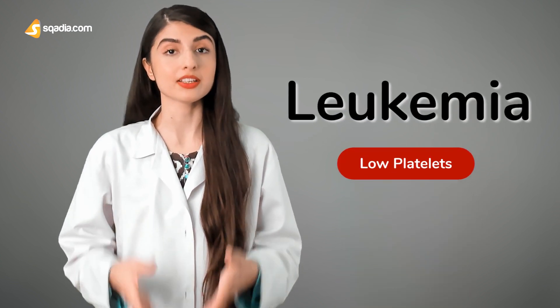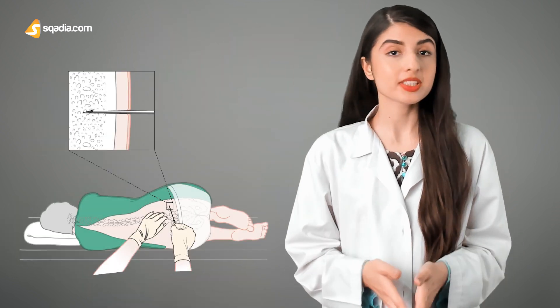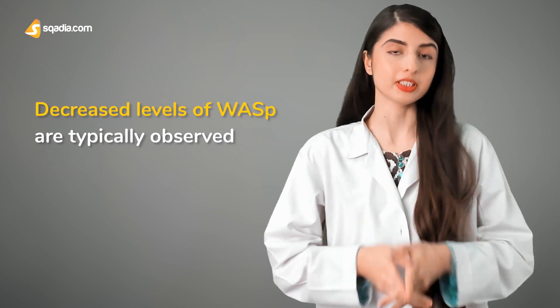Oftentimes, leukemia may be suspected on the basis of low platelets and recurrent infections. However, a bone marrow biopsy may be performed and decreased levels of WASP are typically observed.